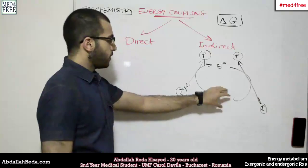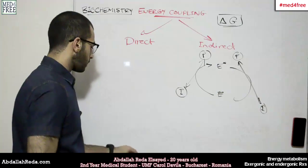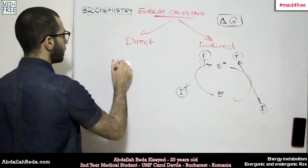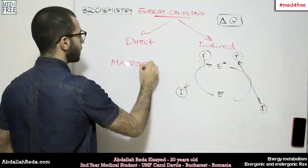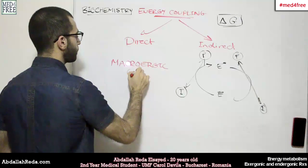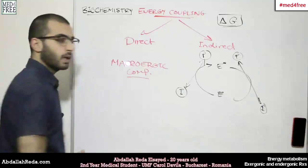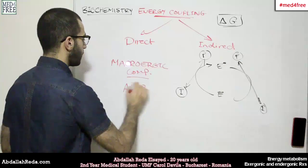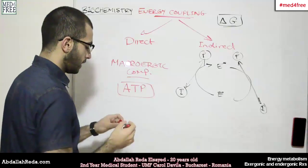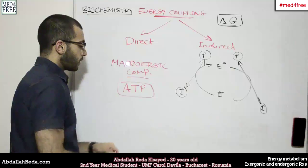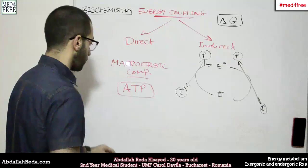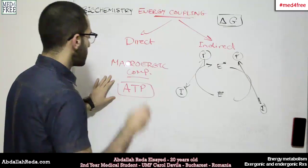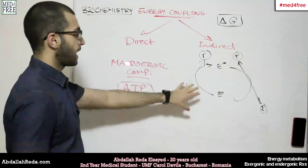The energy molecules involved in such reactions are called macroergic compounds. And the most important example for such compounds is adenosine triphosphate, ATP. Which is the international energy currency, or the universal energy currency for living organisms. So ATP is a very important molecule in that aspect.